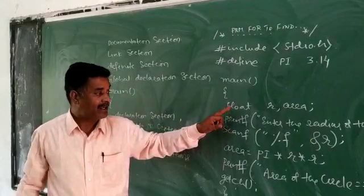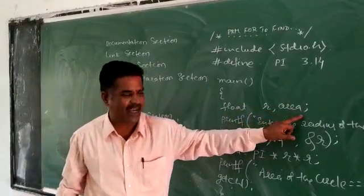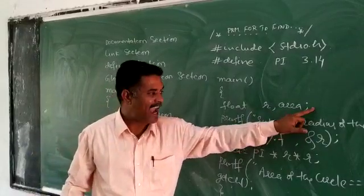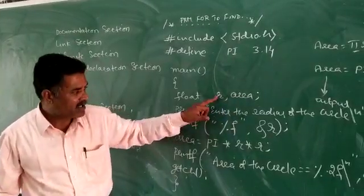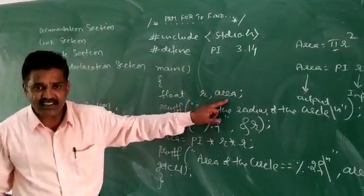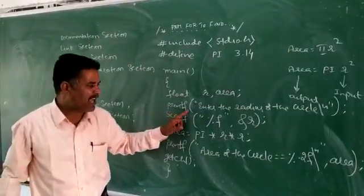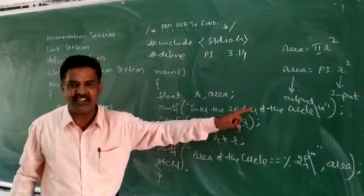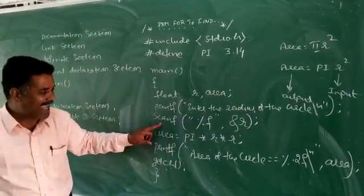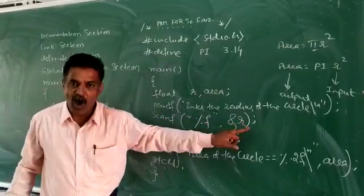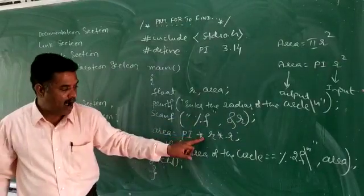The local declaration: float, data type, then variable 1, variable 2, up to variable n, ending with a semicolon. R is the input variable and area is the output variable. The printf statement prompts 'enter the radius of the circle.' The scanf reads the input with conversion %f and address of R. Then area is equal to PI * R * R.